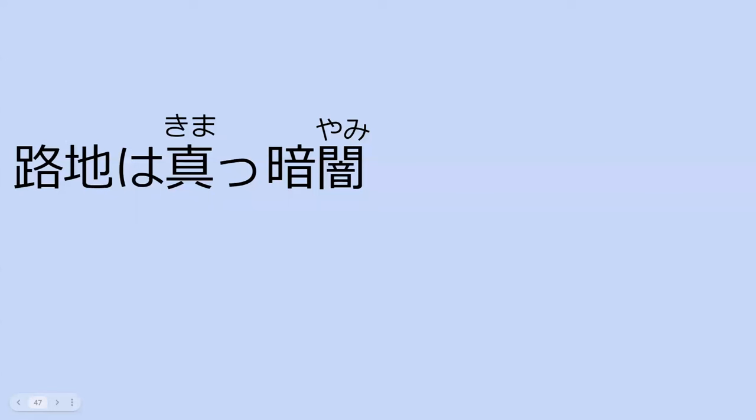The kanji is composed of one component signifying the meaning and another signifying the sound it makes. That makes sense. Can you read the sentence for me? — 'Roji wa makkurayami.' — Perfect. What do you think this means? — The alleyway is truly dark — super duper dark.